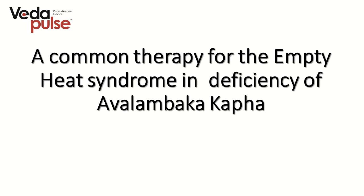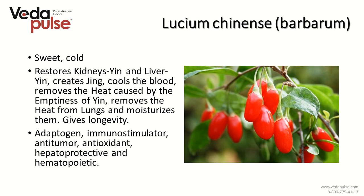To conclude, let's talk about common therapy for Yin deficiency syndrome in deficiency of Avalambaka Kapha when the person doesn't have any well-expressed disorders. We'd like to introduce popular herbs in traditional Chinese medicine — first is Ligustrum (Rousum Chinese). There is a story about this plant in a Chinese tractate: a high-ranking official was returning from a business trip when he saw a young woman punching an old man. He intervened to protect the old man, but the woman replied that it was her grandson she was punishing. The official was stunned — then the woman told him that all residents of her village use this plant as a restorative.